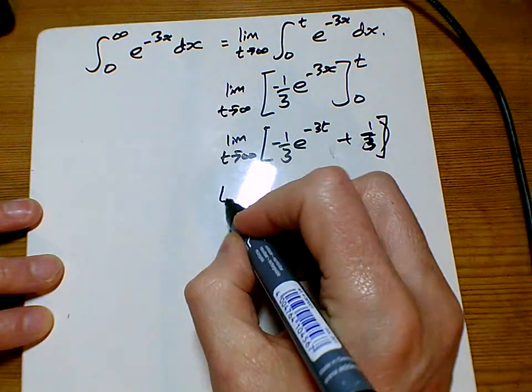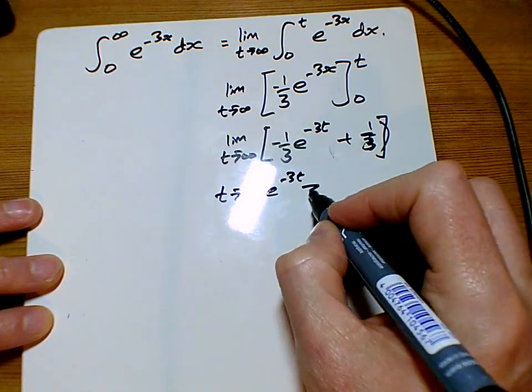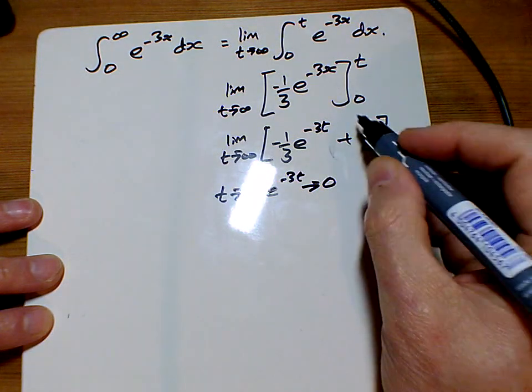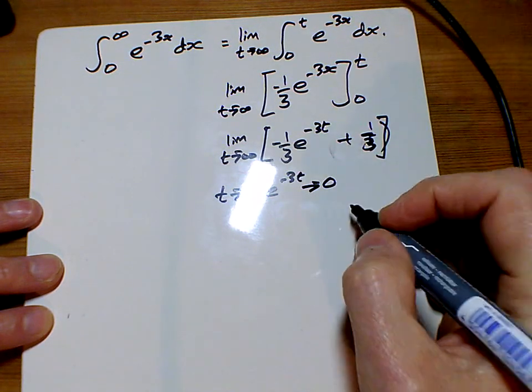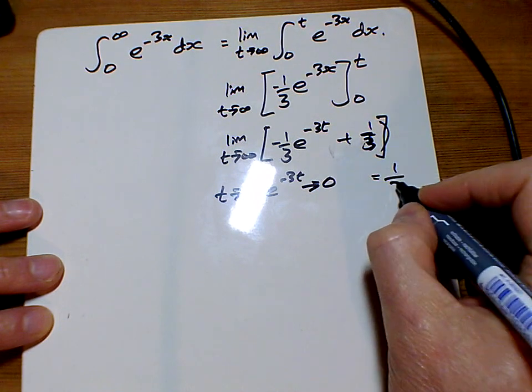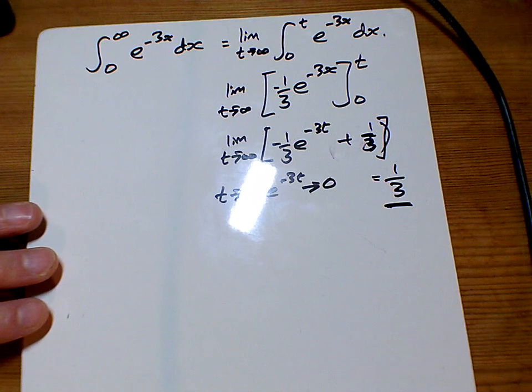Now, as t tends to infinity, e to the minus 3t tends to 0. And so this whole bit here goes to 0, and the answer we get is one third. So yes, it converges, and it converges to one third.